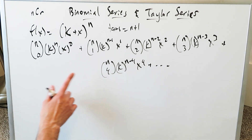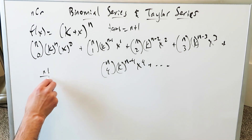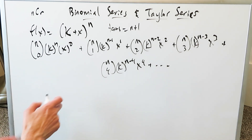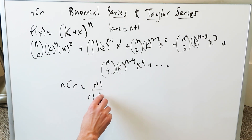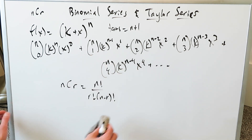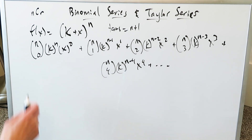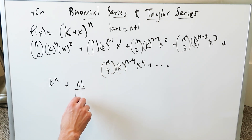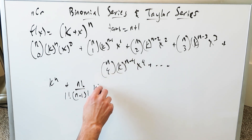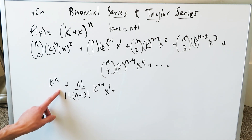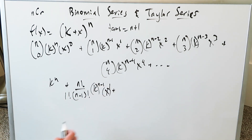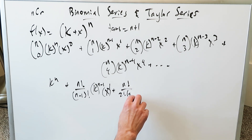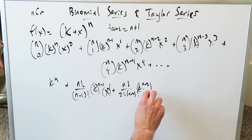Now we have to open this up and create our binomial series. For nC0, everything cancels out and you get k^n. For the nC1 term: n factorial over (n−1)! · 1! gives you n, so you get n · k^(n−1) · x. For the nC2 term: n factorial over 2! · (n−2)! gives n factorial over 2 factorial (n−2) factorial, paired with k^(n−2) · x^2.